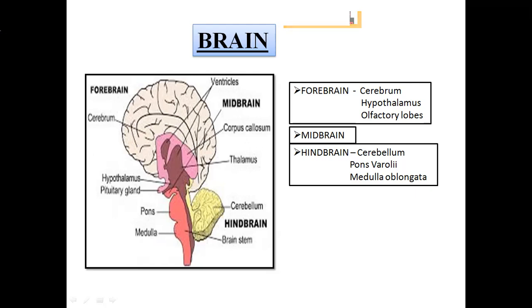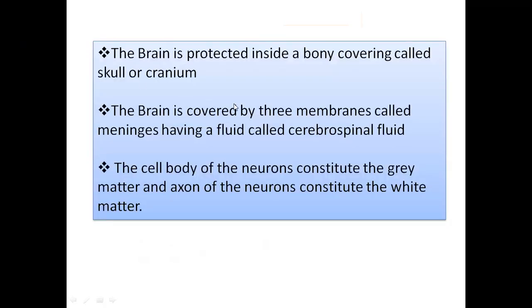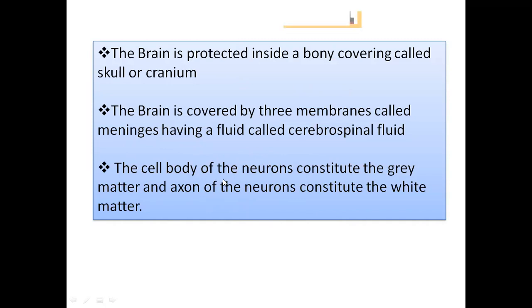The brain is protected inside a bony covering called the skull or cranium. It is covered by three membranes called meninges, having a fluid called cerebrospinal fluid. The cell body of the neurons constitutes the grey matter, and the axon of the neuron constitutes the white matter. This is a very important line: grey matter is nothing but the cell bodies of neurons aggregated together, and white matter is comprised of the aggregates of axons.